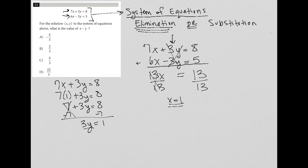3y equals 1. And then divide by 3. So I'm left with y equals 1 third. Now, the question wants me to find the value of x minus y. So that would be 1 minus 1 third.